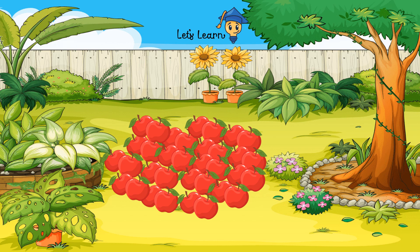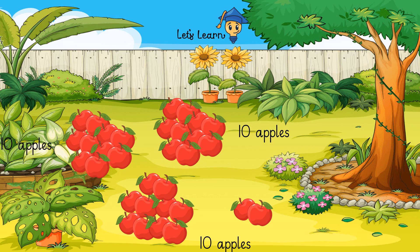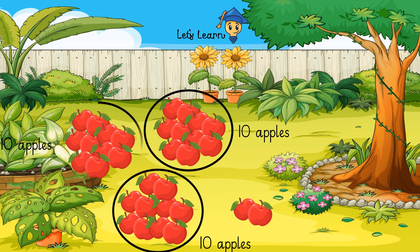Can you see so many apples on the ground? There are so many apples and it is difficult to count them. So to make it easy, we are going to divide all these apples into groups. First we are going to divide them into groups of 10. Now I have divided these apples into groups of 10. There is one group of 10, another group of 10, and the third group of 10 apples, and there are two apples left alone.